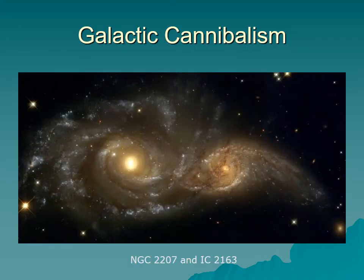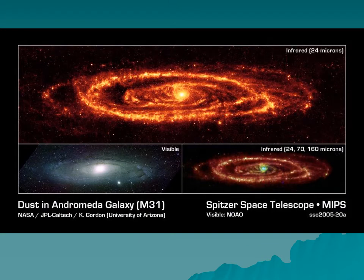Galaxies can also run directly into each other. When a big galaxy and a small galaxy collide, the small galaxy is ripped apart and merges with the big one — that's galactic cannibalism. Here we have a big galaxy eating a smaller galaxy.